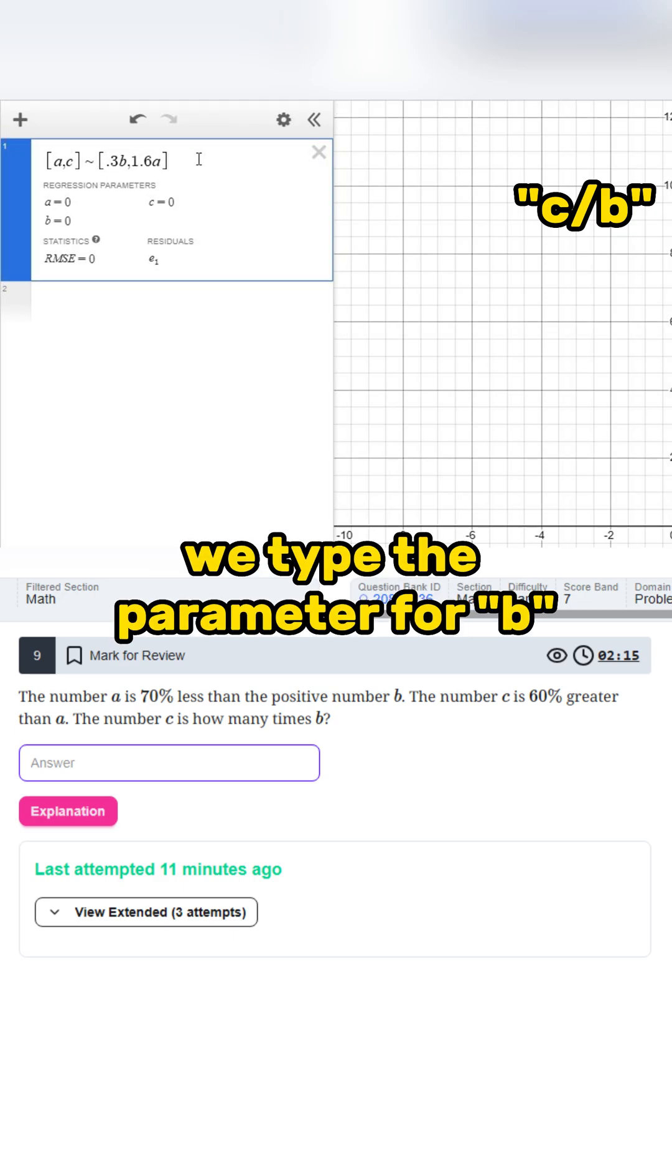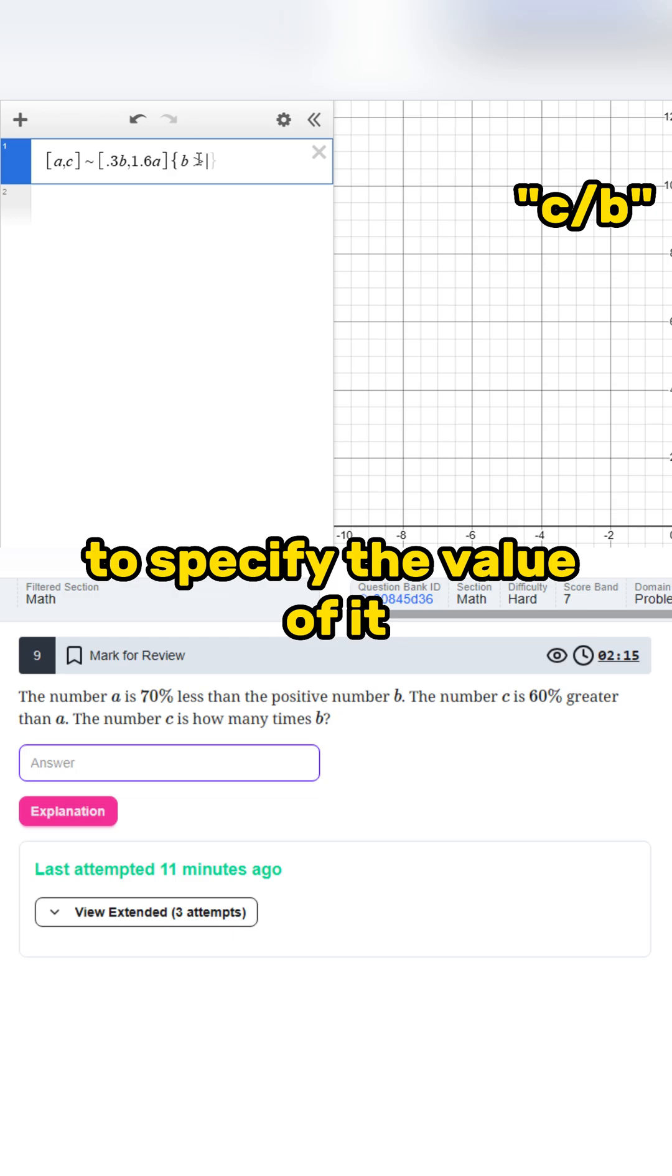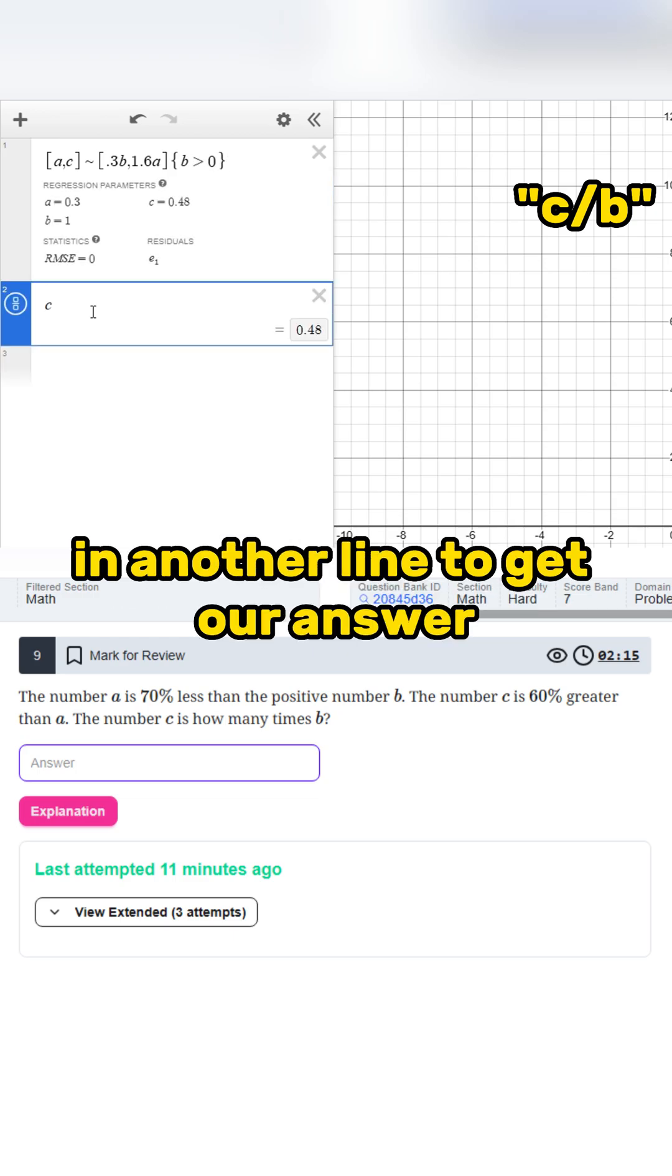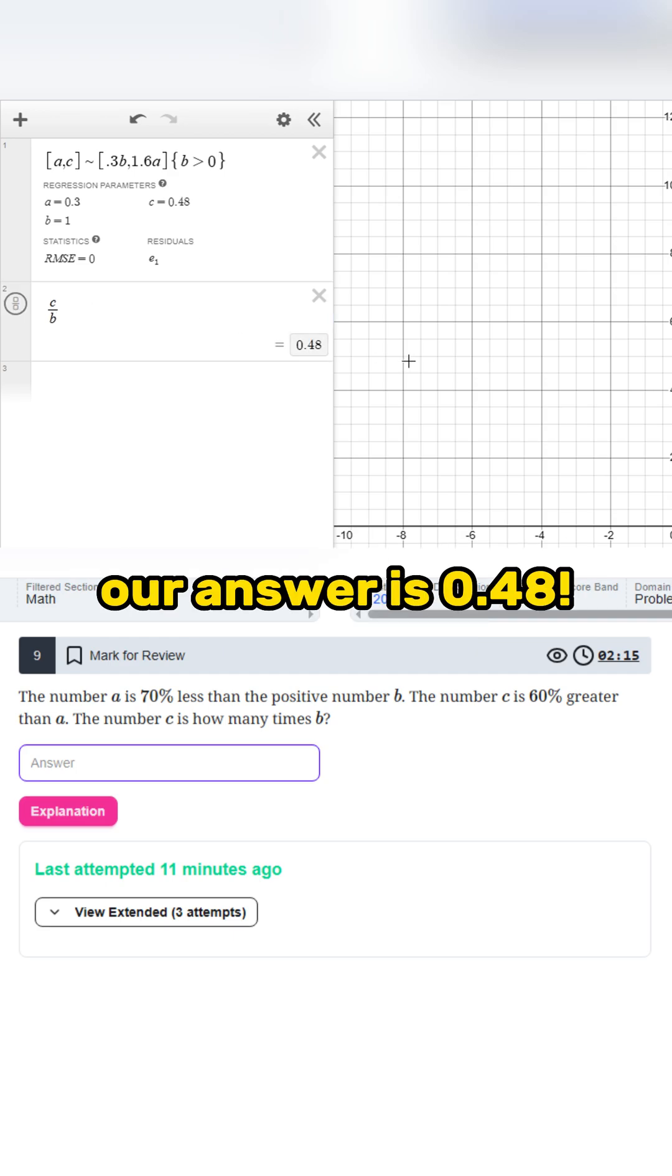After this, we type the parameter for B to specify the value of it. Finally, we can just type in C over B in another line to get our answer, and our answer is 0.48.